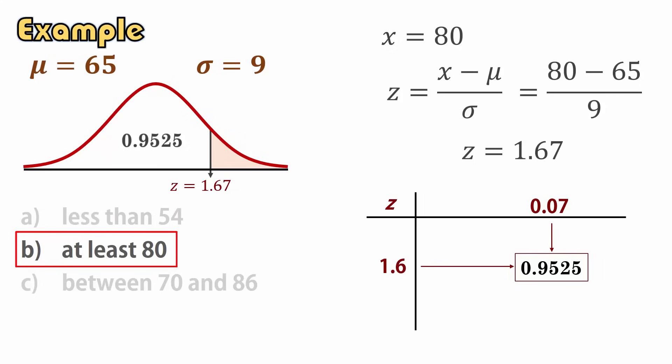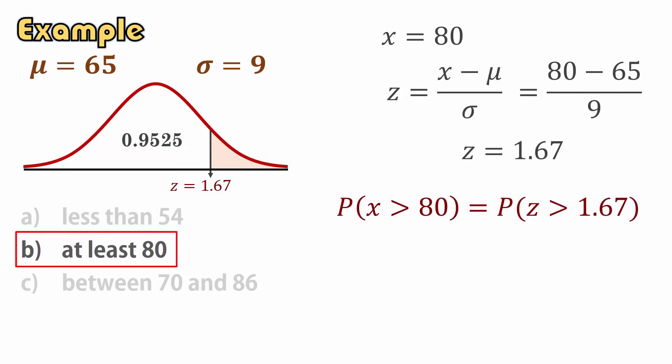Therefore, the probability that x is at least 80 is the probability that z is greater than 1.67, which equals 1 minus 0.9525, giving 0.0475, or 4.75%.